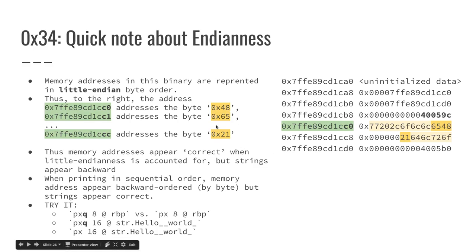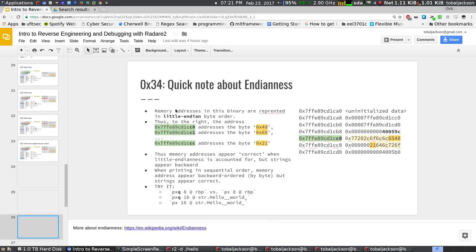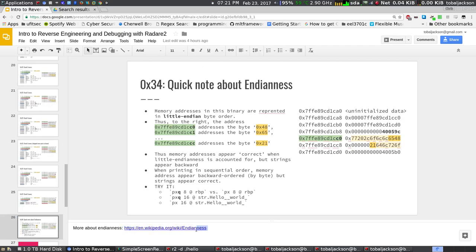This is a weird thing. If you want to know more, every single one of these slides has resources and web links so you can read more about any of this. This endianness slide is no exception — this Wikipedia article will tell you everything you ever wanted to know about endianness.